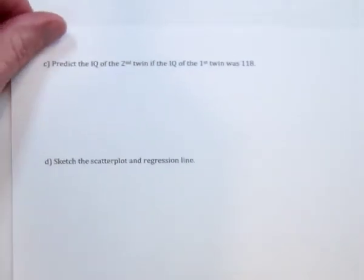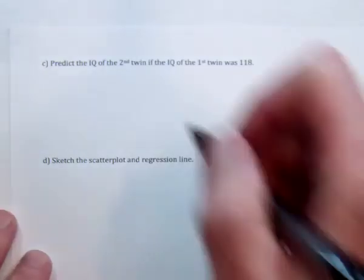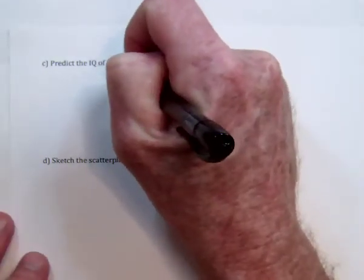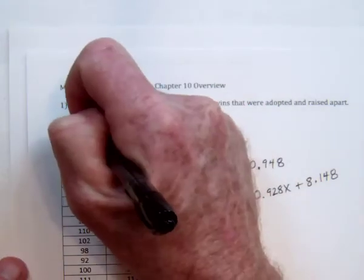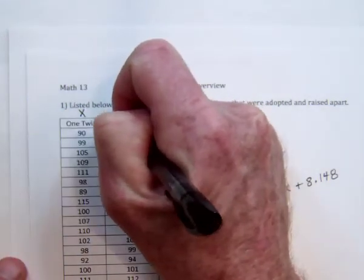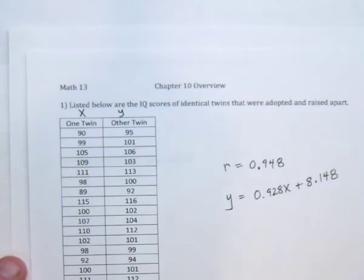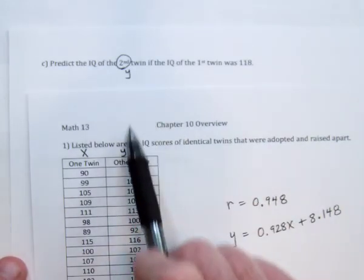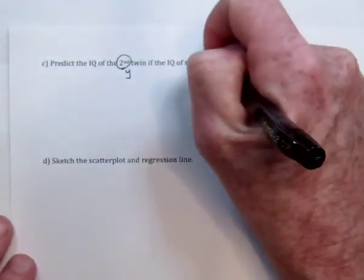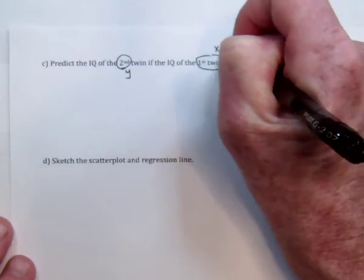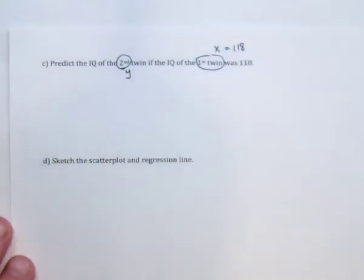So now we're going to go on to part C, predict the IQ of the second twin. So this was the Y value, because whenever you have data, and you put it in a list like this, then the calculator's going to use this is X, and this is Y. So if it was the second twin, the second twin is the Y value. So the first twin, that's the X. In other words, it's saying if X equals 118, then what does Y equal?